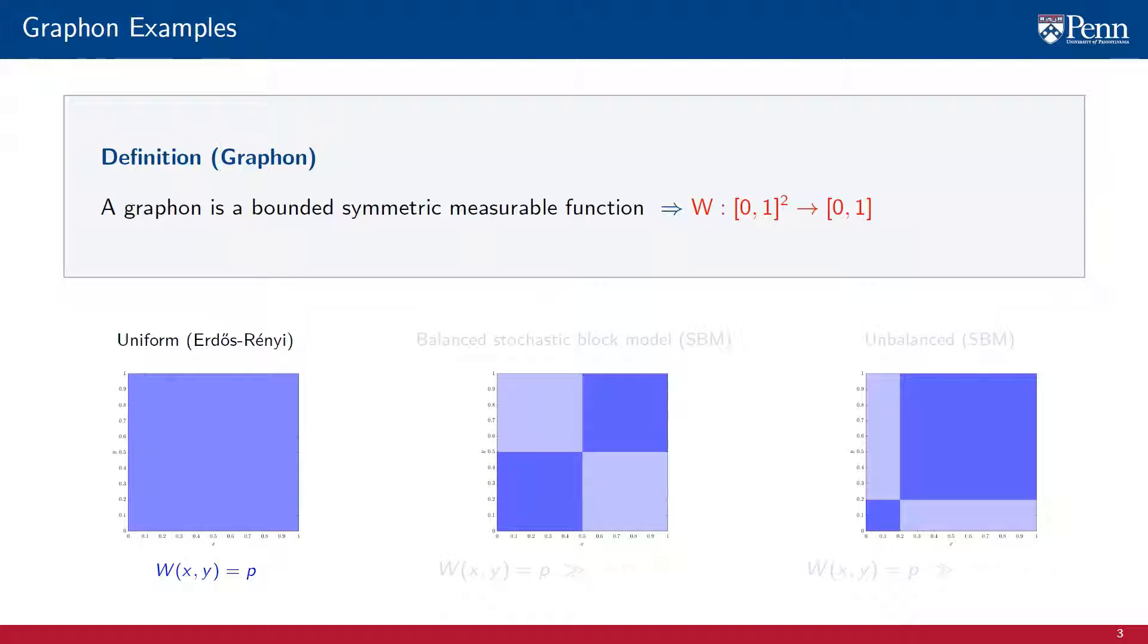The uniform or Erdos-Renyi graphon is such that w(x,y) is constant and equal to p for all values of x and y. This graphon is related to the Erdos-Renyi family of random graphs, which consists of graphs where edges are drawn independently with the same probability.